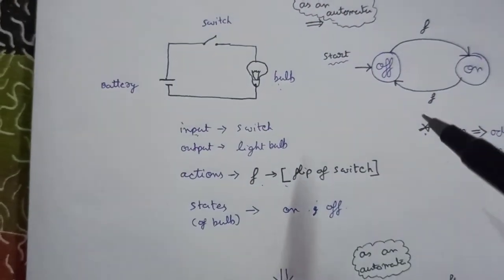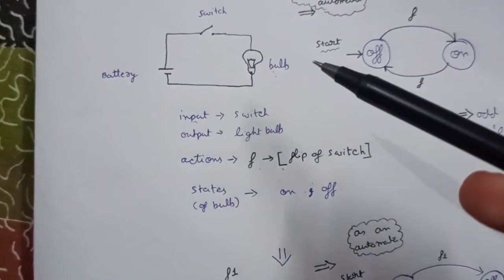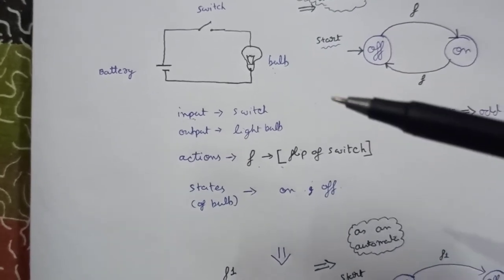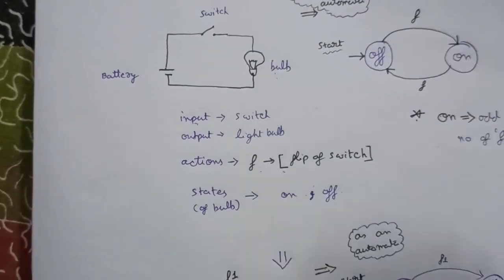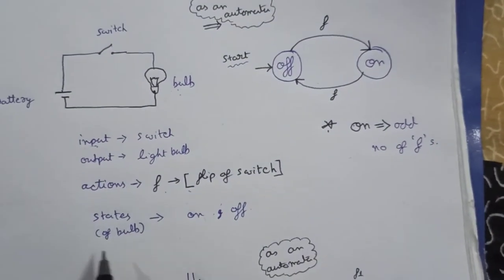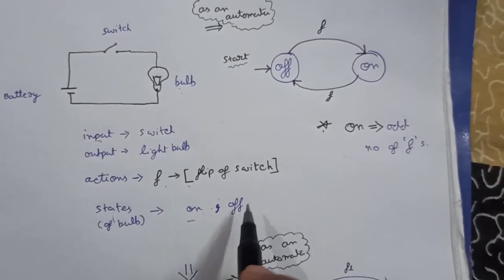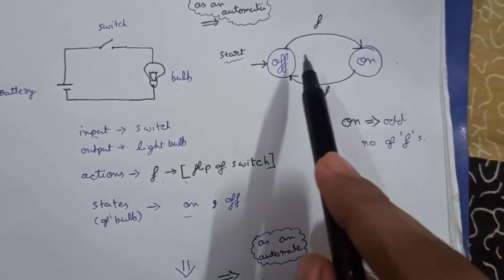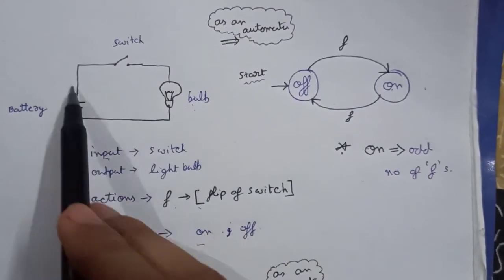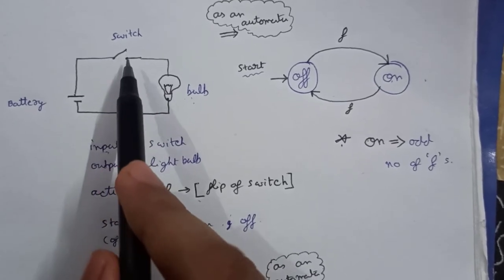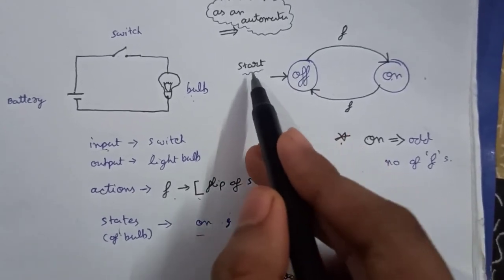Now we will see how we can describe this whole simple system as an automata. This system is very familiar to us — in everyday life we use a switch to turn on light bulbs. The states of the bulb are two: on and off. I have made two states, on and off, and put them in circles. Since the switch is off in the beginning, I have marked the off state as the start.